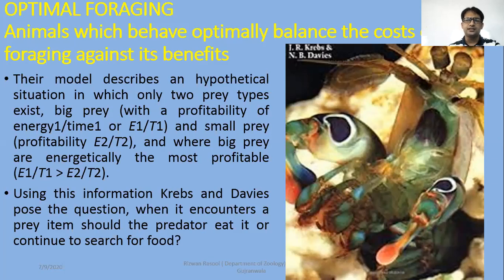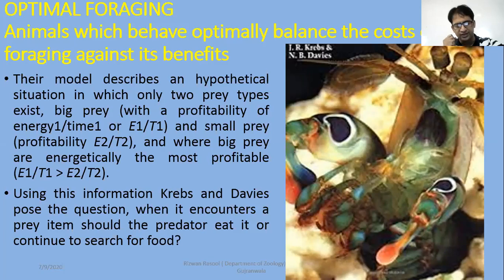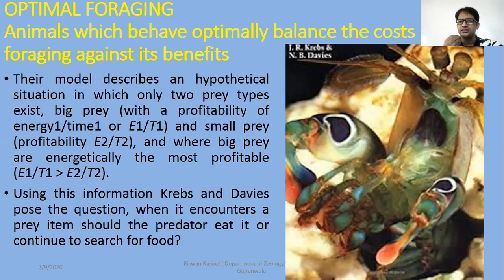When a predator finds a second prey, it has to choose whether to feed only on the larger prey or also accept smaller size prey. If the animal feels that larger prey density is sufficient in the population and can be consumed easily, then animals may ignore smaller size prey. If the larger prey is readily available, smaller prey will simply be fed to crabs less frequently.